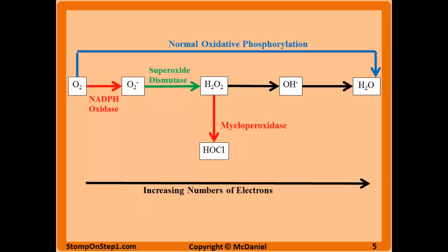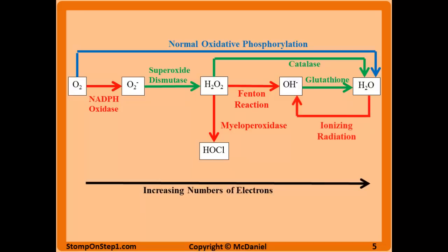Myeloperoxidase (MPO) is an enzyme — mainly in neutrophils — that converts hydrogen peroxide into hypochlorous acid (HOCl), shown in red because you're generating a free radical. The Fenton reaction is a set of steps using iron that converts hydrogen peroxide to hydroxide, also generating a free radical. Catalase is an enzyme that converts hydrogen peroxide to water, safely eliminating it. Glutathione is an enzyme that can convert the hydroxide free radical to water. Ionizing radiation can convert water into hydroxide by splitting the water molecule.